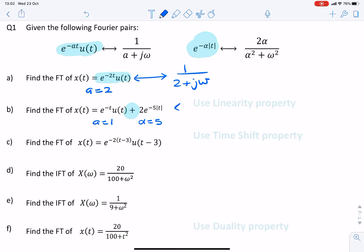So here we use the linearity property to add the two spectra. So we'd have 1 over 1 plus j omega plus 2 multiplied by 2 times 5 divided by 5 squared plus omega squared.